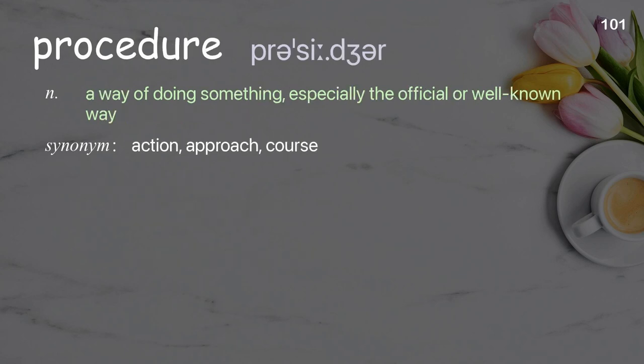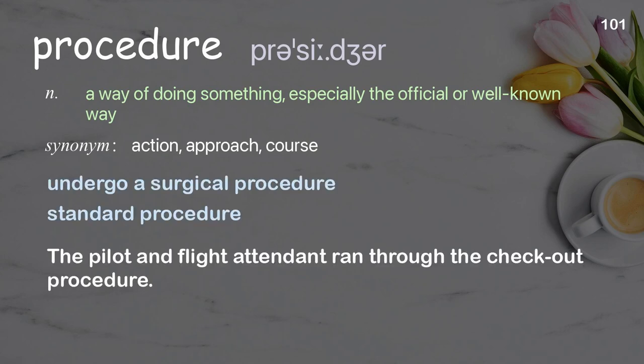Procedure: a way of doing something, especially the official or well-known way. Examples: undergo a surgical procedure, standard procedure. The pilot and flight attendant ran through the checkout procedure.